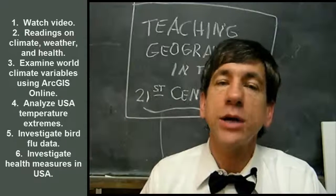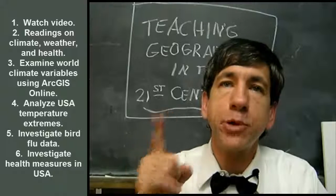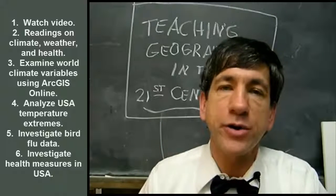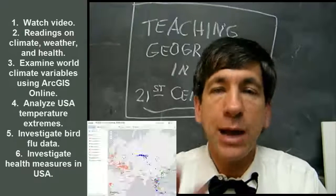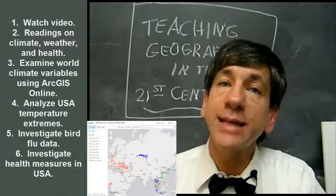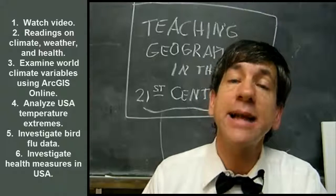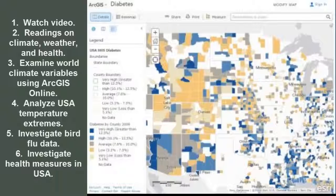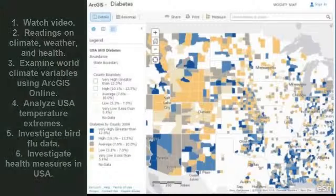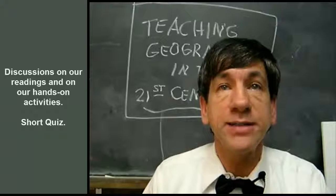Number five, we're going to investigate some health variables, specifically bird flu patterns around the world and how it changed over space and time. And sixth and finally, we're going to investigate selected health measures in the USA — we'll probably do something with diabetes. So that's what we're going to do as far as learning activities.